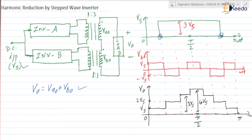Here S1 is turned on, and here S1 is turned off. Suppose inverter A and B are full bridge inverters, so each consists of four switches S1, S2, S3, S4. We have turned on S1 here and turned off S1 here, so the output voltage will be VS. With a 1-to-3 turns ratio transformer, we get 3VS. That is why we have 3VS here.